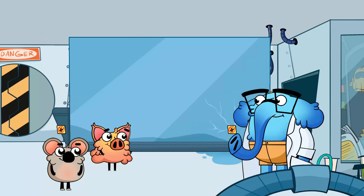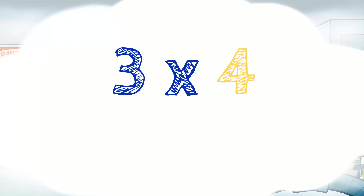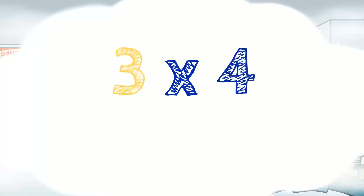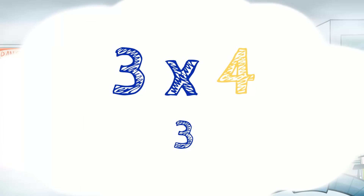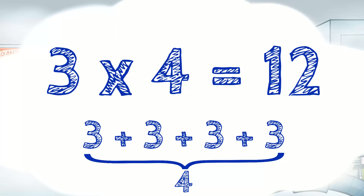multiplication is just repeating addition and nothing more. Let's take a problem like 3 times 4. The first number is the number we should add, and the second number is the number of times we should add the first number. In this example, the first number is 3, so we'll add 3, and the second number is 4. That means we'll add 3 four times. So 3 plus 3 plus 3 plus 3 makes 12. That means 3 multiplied by 4 is 12.